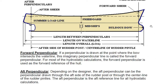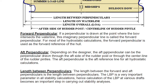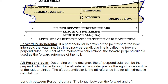The aft perpendicular, depending on the designer, can be the perpendicular drawn through the aft side of the rudder post or through the centerline of the rudder pintles. It is an imaginary line. The aft perpendicular is the aft reference line for all hydrostatic calculations — all naval architecture problems use this as the reference.